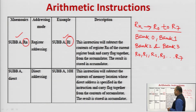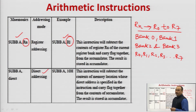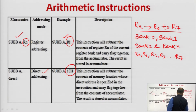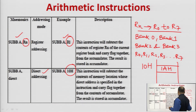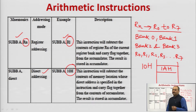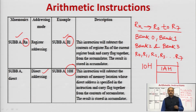Next is SUBB A, direct. Here the direct address of the memory where the data is present is specified with the instruction — this is the direct addressing mode. For example, 10h is the direct address. Suppose the data at memory location 10h is 1Ah. Whenever the microcontroller executes SUBB A, 10h, it subtracts the content 1Ah of that memory location from the accumulator along with the borrow flag, and stores the result back into the accumulator.